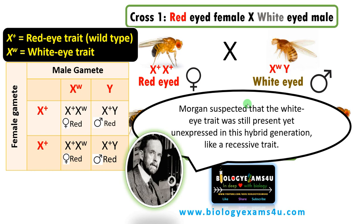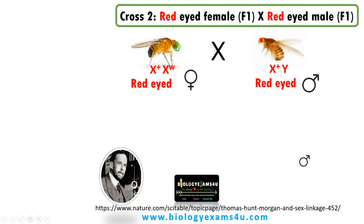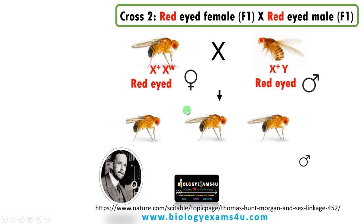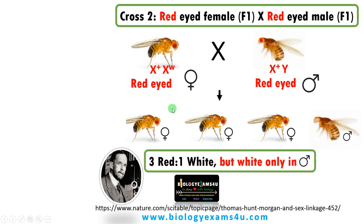So he did the second cross. The red-eyed female formed in F1 was mated with the red-eyed male formed in F1. The genotype of the F1 red-eyed female is X⁺X^W — heterozygous — and the red-eyed male is X⁺Y. As expected, he got the 3:1 ratio as Mendel suggested.